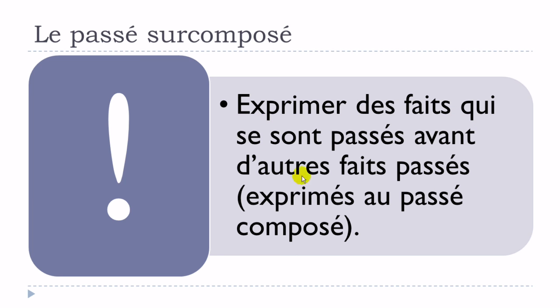We use le passé surcomposé pour exprimer des faits qui se sont passés avant d'autres faits passés exprimés au passé composé. So if you want to express something in the past, normally you use the passé composé. But if you want to express facts that happened before those past events, you use le passé surcomposé.